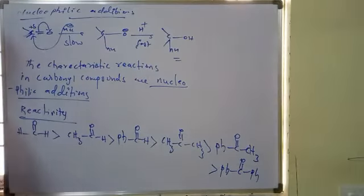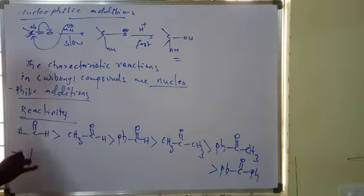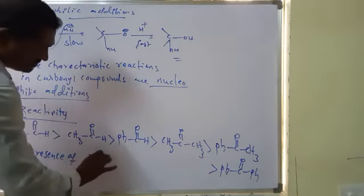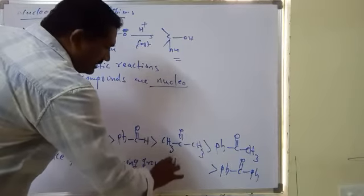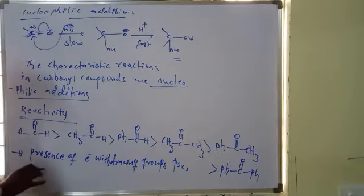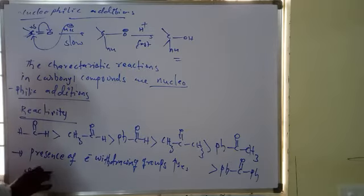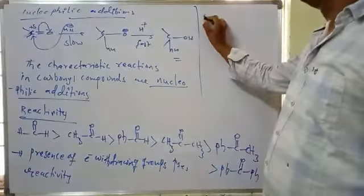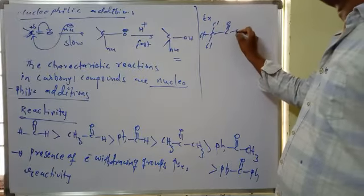In nucleophilic addition reactions, formaldehyde is more reactive. Also, the presence of electron-withdrawing groups increases reactivity. For example, chloral — which has three chlorine atoms — is more reactive than acetaldehyde.